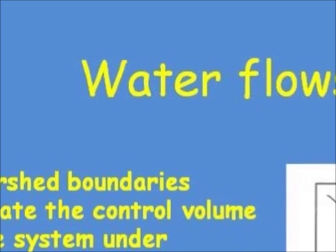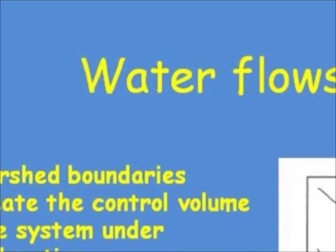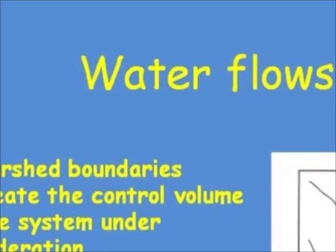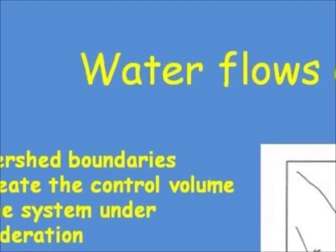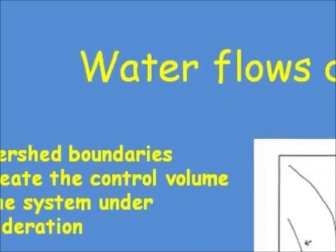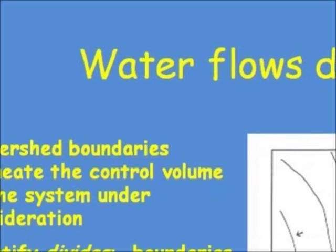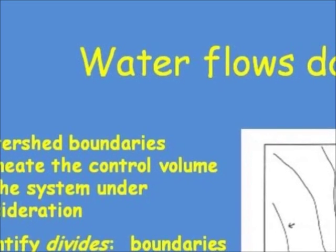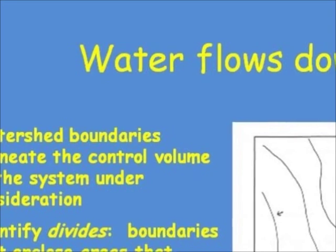The control volume represents the boundary between the things that we care about and things that we don't care about. In the case of a watershed, we care about areas that may be contributing to surface water flow. We don't care about things outside of the system.